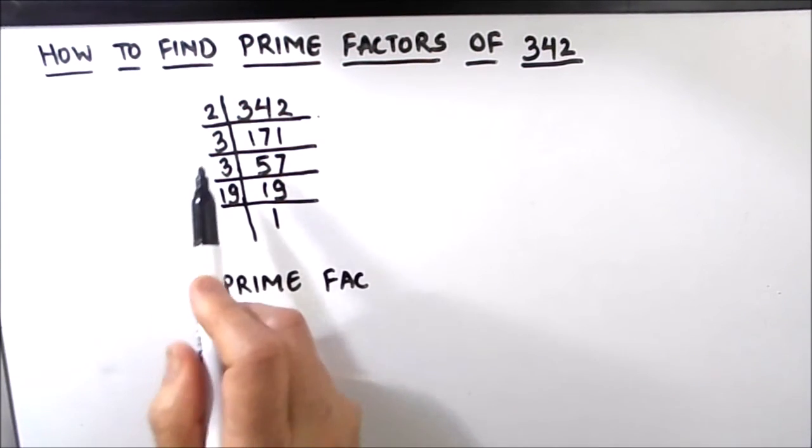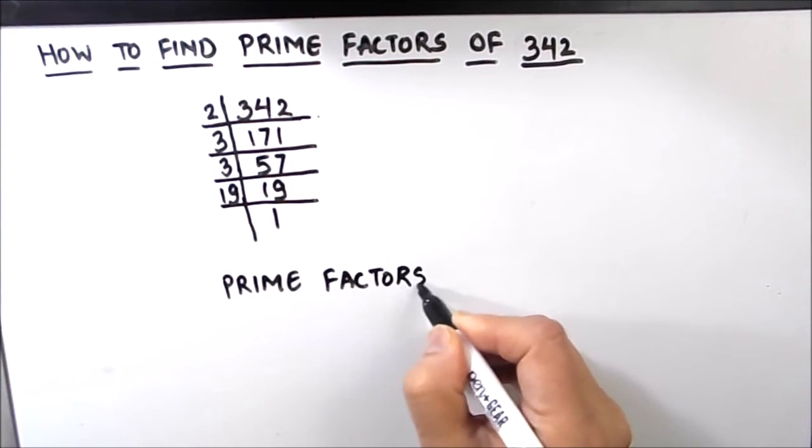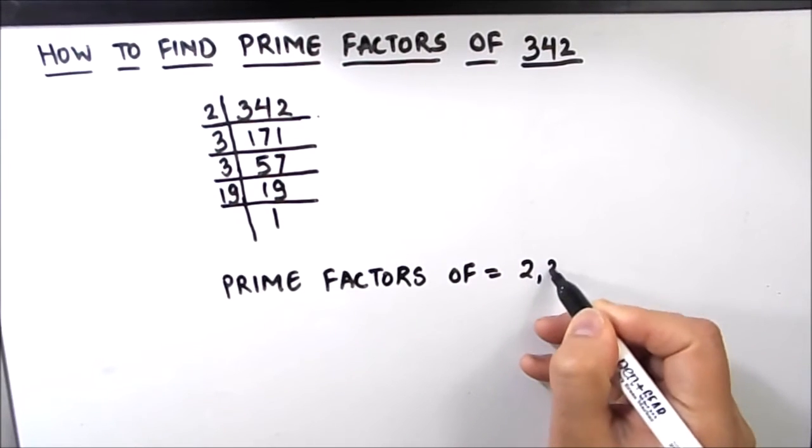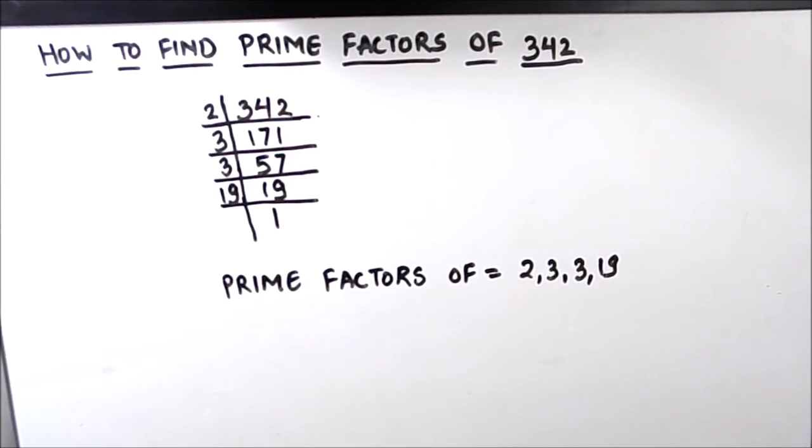So the numbers written on the left hand side of the ladder are the prime factors of 342. Prime factors of 342 are 2, 3, 3, and 19. This is how we can find the prime factors of any number using the prime factorization method.